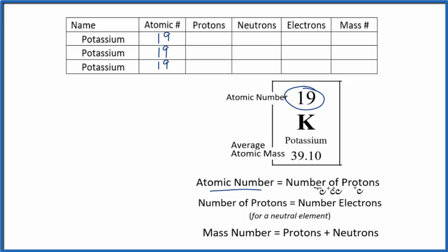Atomic number also equals the number of protons in an atom. So we'll have 19 protons for each one of these isotopes.